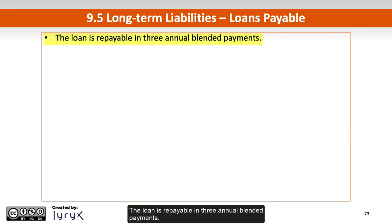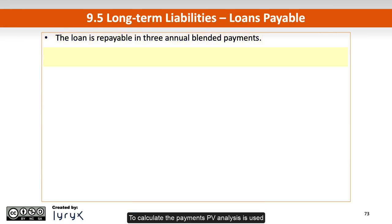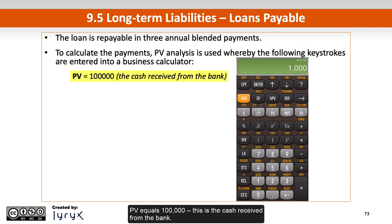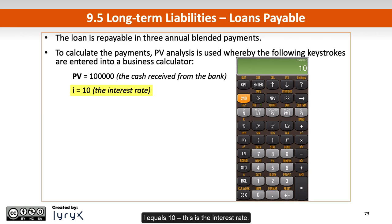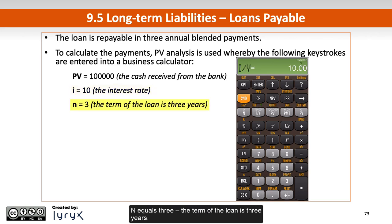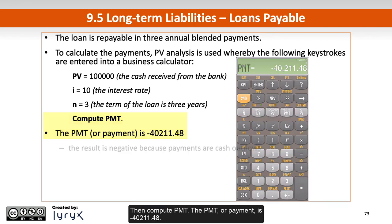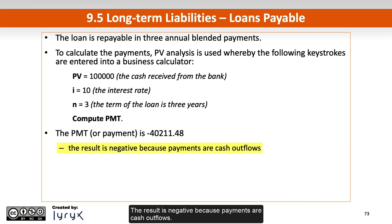The loan is repayable in three annual blended payments. To calculate the payments, PV analysis is used, whereby the following keystrokes are entered into a business calculator: PV equals 100,000 — this is the cash received from the bank; I equals 10 — this is the interest rate; N equals 3 — the term of the loan is 3 years. Then compute PMT. The PMT, or payment, is minus $40,211.48. The result is negative because payments are cash outflows.